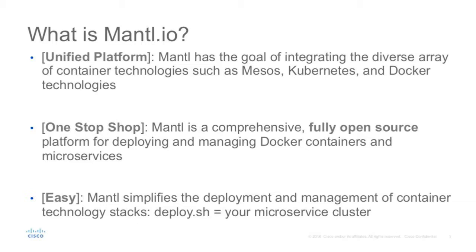These technologies by themselves are fairly basic, fairly bare bones, and fairly complex to manage and deploy. So what we have done, in addition to integrating the platform together, is we've also built a variety of services — such as service discovery, NFE, load balancing, policy, governance, and security. We're using open source technologies such as Vault, and load balancing technologies like NGINX, integrating them in a unified way into the platform. So not only do you get a unified stack of technologies, but you actually get everything you need to manage, operate, and deploy your next-generation microservices and Docker containers — all open source.